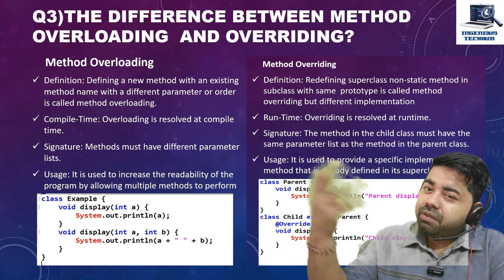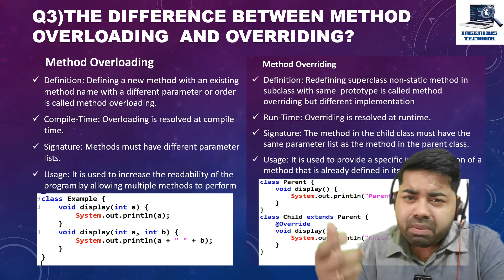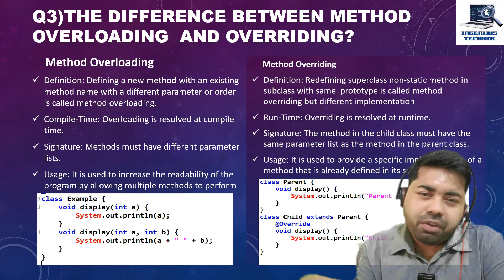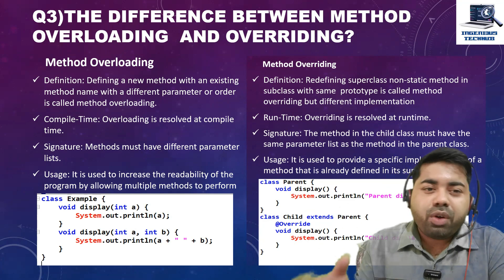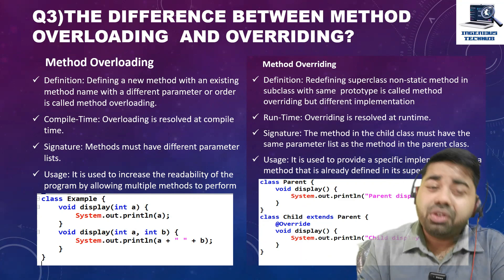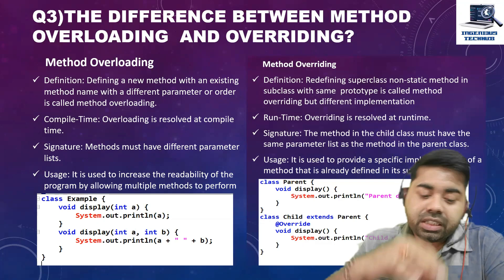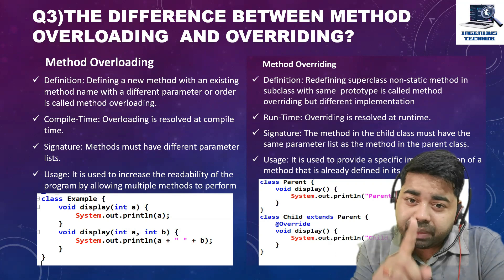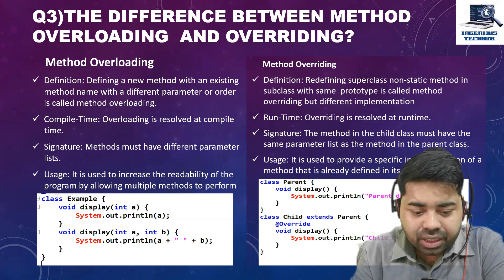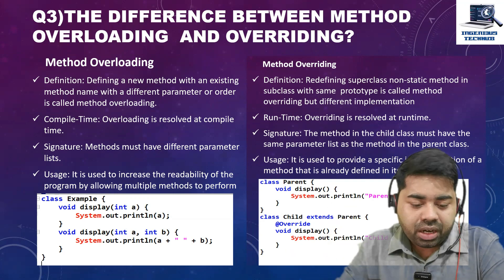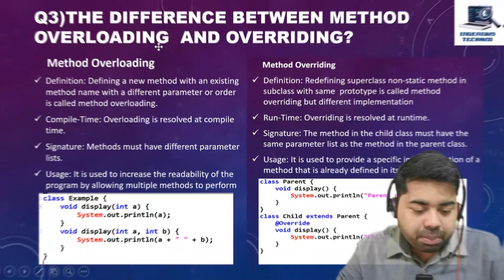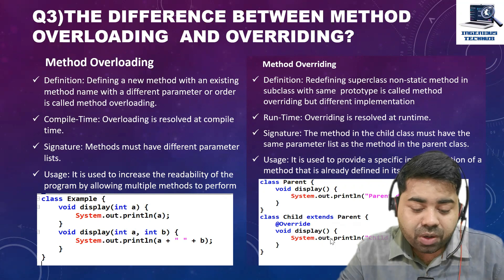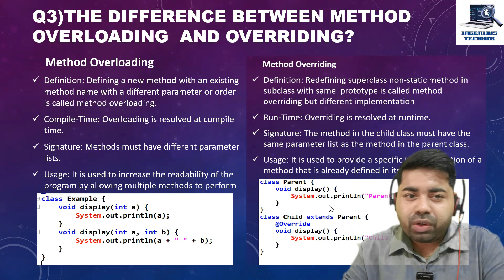For example, when we write WebDriver driver = new ChromeDriver(), this is an example of overriding. When you call driver.get(), which method executes? The ChromeDriver type method. If you are holding a FirefoxDriver, the FirefoxDriver method executes. The method name is get but we are providing a different implementation from what is defined in the super class. In the code you can see a parent class and child class with a display method providing different implementations.